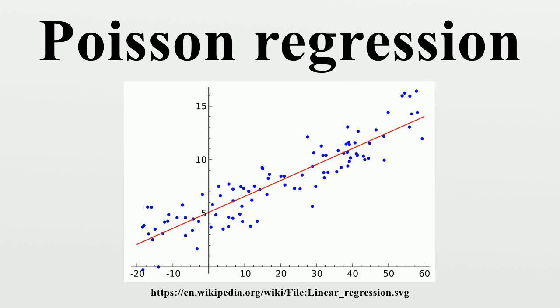there will be more zeros than a Poisson regression would predict. An example would be the distribution of cigarettes smoked in an hour by members of a group where some individuals are non-smokers.